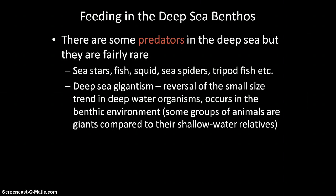There are some predators in the deep sea, but they're pretty rare compared to deposit feeders. Types of deep sea predators include sea stars, fish, squid, sea spiders, and the tripod fish. I mentioned the concept of deep sea gigantism, where you get a reversal of the small-size trend — you get giant things living on the seafloor compared to their small counterparts up in the water column. For example, a sea spider pulled up could be 35 inches wide rather than just a couple of inches.